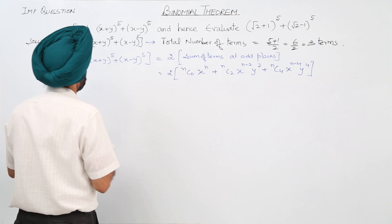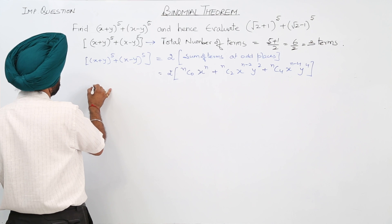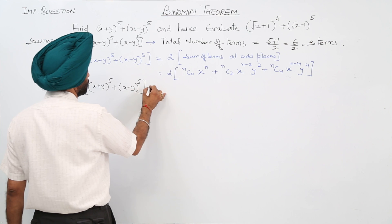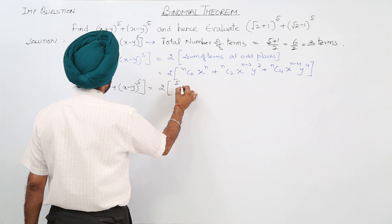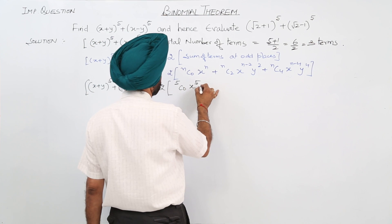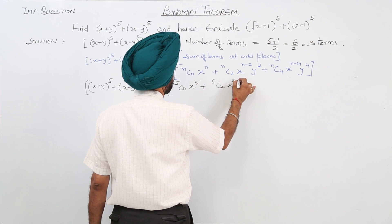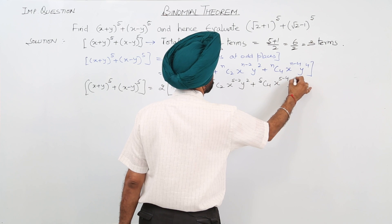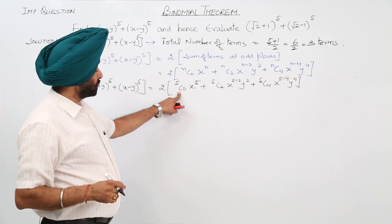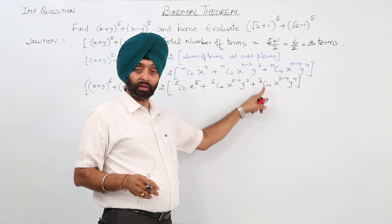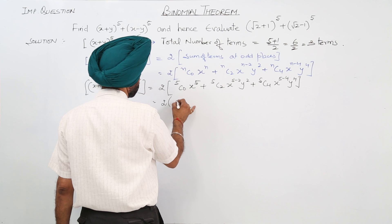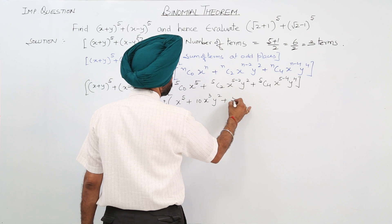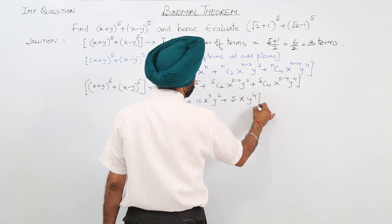Substituting the values: (x + y)⁵ + (x - y)⁵ equals twice of [⁵C₀ · x⁵ + ⁵C₂ · x³ · y² + ⁵C₄ · x · y⁴]. Now ⁵C₀ = 1, ⁵C₂ = 10, and ⁵C₄ = 5. So we get 2(x⁵ + 10x³y² + 5xy⁴).